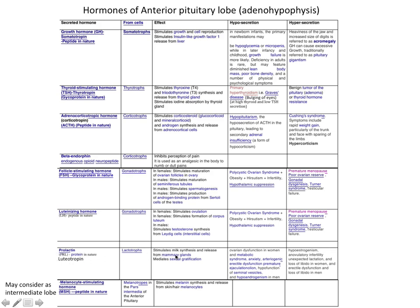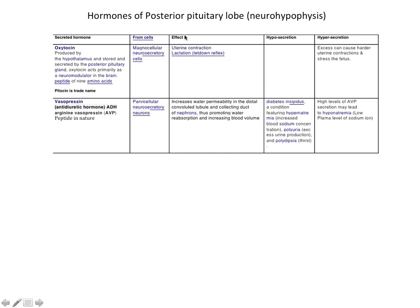Another important hormone is prolactin, secreted from lactotropes; it stimulates the synthesis and release of milk from the mammary gland in mammals. From the mid lobe of the pituitary gland, MSH — melanocyte stimulating hormone — is released, secreted from the melanotropes. It stimulates melanin synthesis and release from the skin and hair. Melanin protects us from UV light; African people have more melanin because UV exposure is very high in that region.